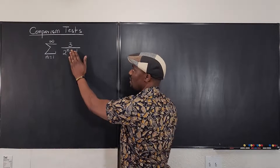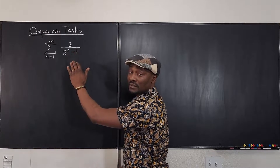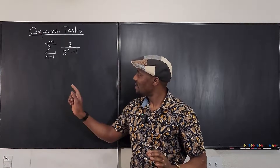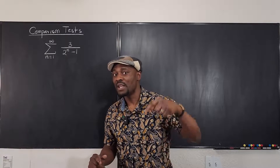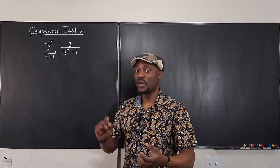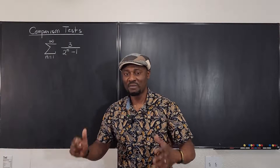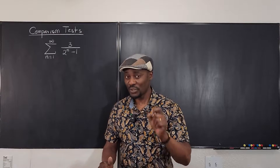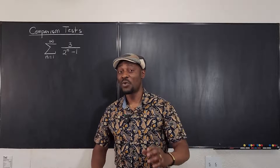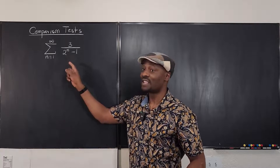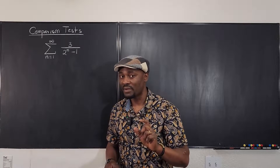Because if the minus one wasn't here, we could write this as 3 times one half raised to the power n. So now we know it is a modified geometric series, and that's what we're going to compare it to — whether you're doing direct comparison or the limit comparison test. You're still going to compare it to a geometric series. Don't compare to random things; you have to know what you're comparing it to. We compare this to a geometric series with a common ratio of one half.